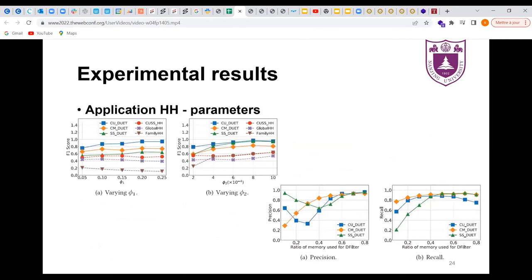We explore the effects of parameters in the application HH. Specifically, we vary phi and theta to compare our framework with other algorithms. Meanwhile, we explore the effects of ratio of memory used for XFilter. We find that we can obtain higher accuracy when the ratio of memory used for XFilter is around 0.6 for CU-DUET and 0.7 for CM-DUET and SS-DUET.